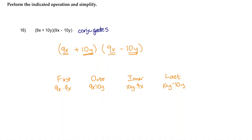So whenever you have conjugates and you're foiling them together, the outer and the inner terms are always going to cancel each other out.